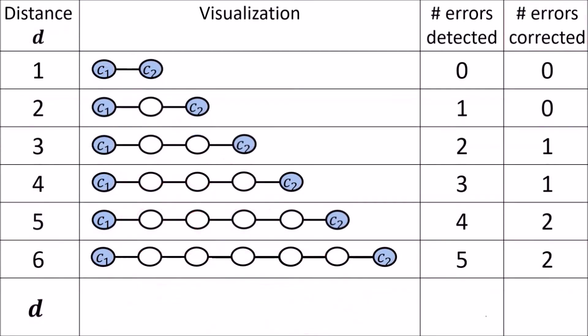In general, with a distance d between code words, we are guaranteed to be able to detect up to d minus one bit errors, and correct up to floor((d−1)/2) errors, rounding down if we get a fraction.